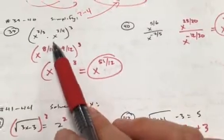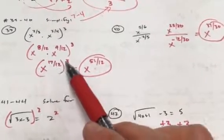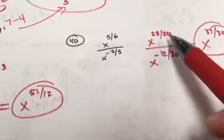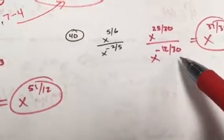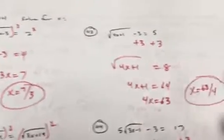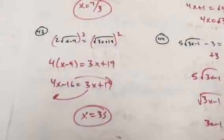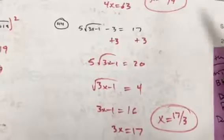Get the same denominator for the exponent fractions: same base means add the exponents, so 2/3 + 3/4 = 17/12. Raised to the third power: 3 times 17 = 51/12. For the subtraction problem, get the same denominator: 25/30 is 5/6; negative 2/5 is negative 12/30; when you divide, subtract the exponents. For the radical equations: square both sides to remove the square roots; add 3 to both sides then square; for the one with the 2 outside, don't forget to square the 2, then add 3 and divide by 5, then square both sides.